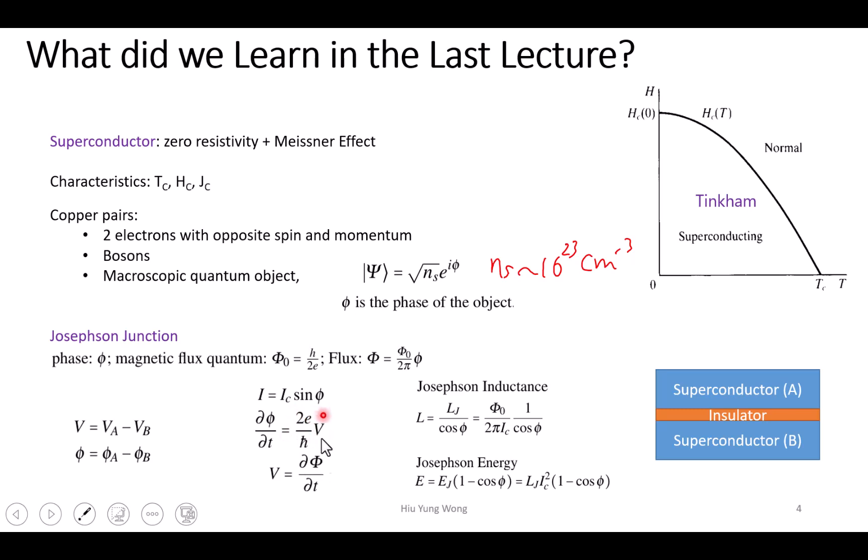In Josephson junctions, remember the voltage across it causes a change of the phase difference. These are the first Josephson equation and second Josephson equation, not junction. This is very instructive. It is V equal to ∂φ/∂t. The so-called flux is actually just the reduced flux quantum times the phase divided by 2π. This reminds us of Lenz's law, like what you said last time.